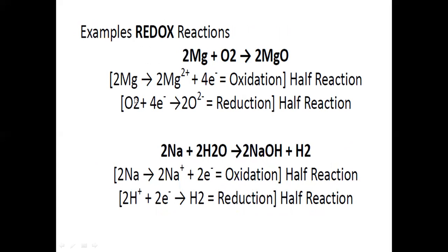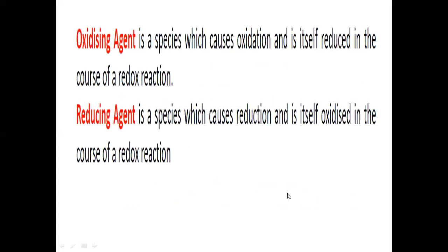In the magnesium-oxygen reaction, magnesium donates its electrons to oxygen: 2Mg → 2Mg²⁺ + 4e⁻ (oxidation). Then O₂ + 4e⁻ → 2O²⁻ (reduction). Similarly, for the reaction of sodium with water forming NaOH and hydrogen gas: 2Na → 2Na⁺ + 2e⁻, and 2H⁺ + 2e⁻ → H₂. These are the half-reactions of oxidation and reduction.